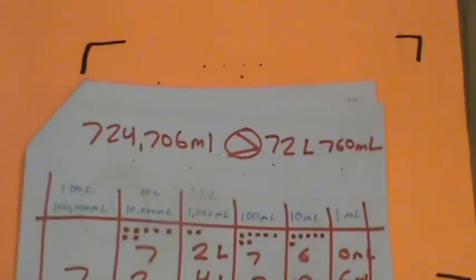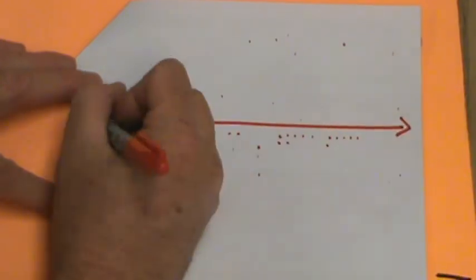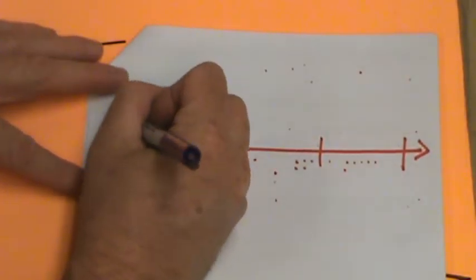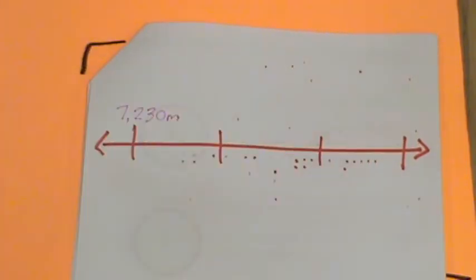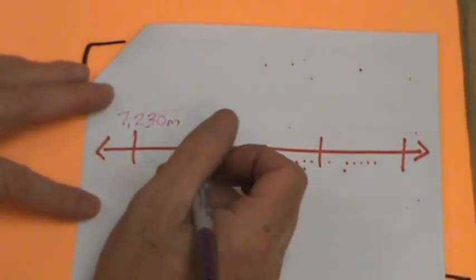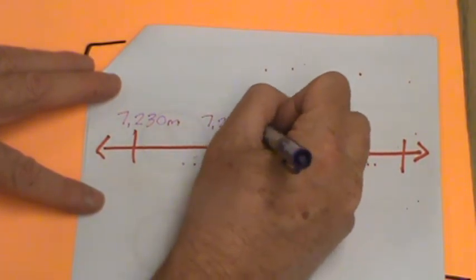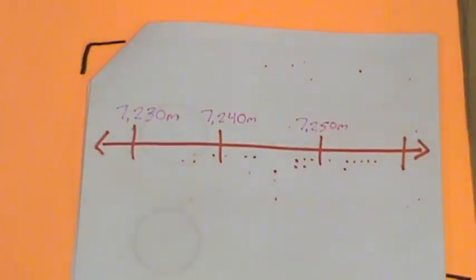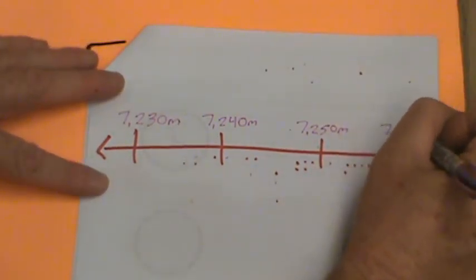We'll continue on. Next page. I hope I have another page left. We're going to do a number line. Yahoo! So, make your number line. Alright. We're going to put four ticks. One, two, three, and four. Okay? First tick. We're going to label 7,230 meters. 7,240 meters. 7,250 meters. And 7,260 meters.